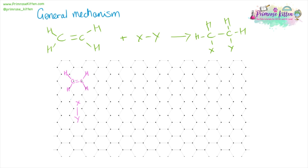They're going to get orientated with the slightly positive one attracted to the electron-rich area, and the slightly negative one attracted away from it. Then we can show the movement of electrons — this is where electrons start and where they go to. They start at the double bond and go to either X or Y, whichever way it's orientated. This is going to lead to the formation of a carbocation, with X being added on. Then we're going to have a positive charge because the electrons have gone down, so they are with Y.